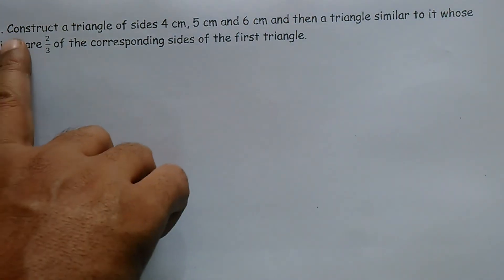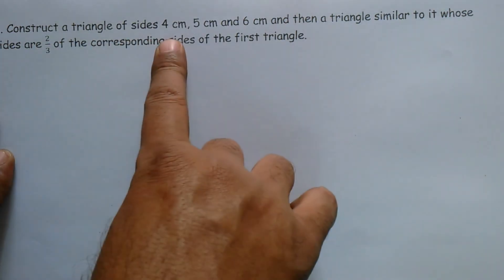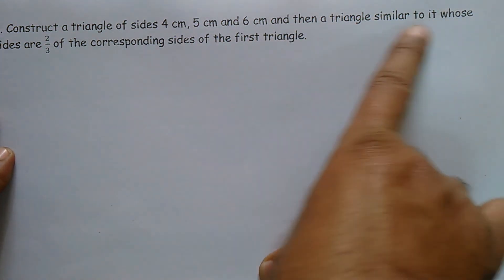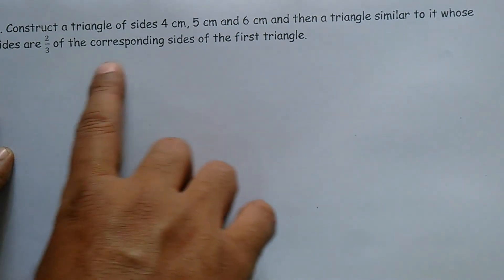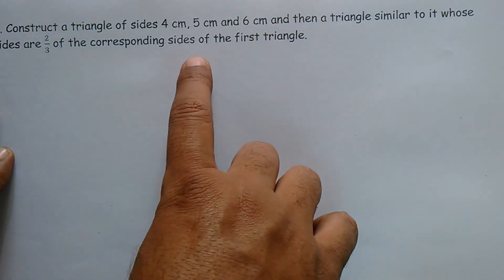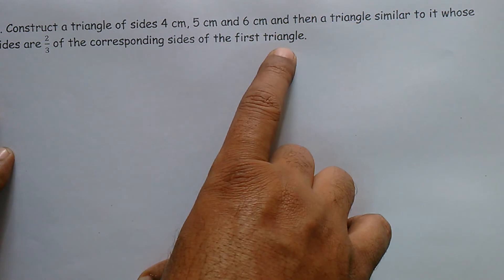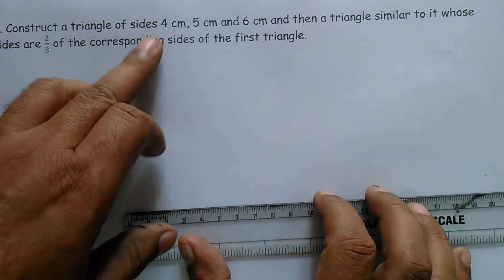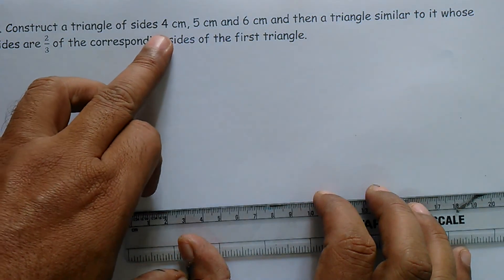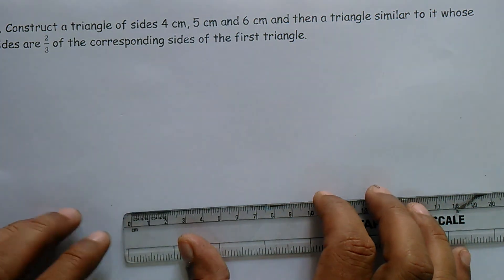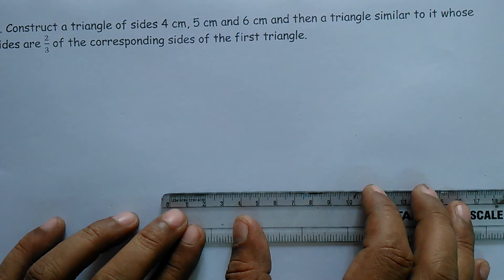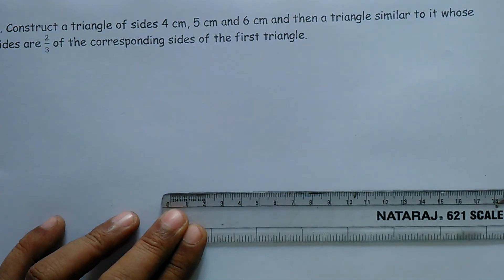Second question: Construct a triangle of sides 4 cm, 5 cm, and 6 cm, and then a triangle similar to it whose sides are two-thirds of the corresponding sides of the first triangle. To solve this question, first we have to draw a triangle with sides 4 cm, 5 cm, and 6 cm. So first draw the base of length 6 cm.